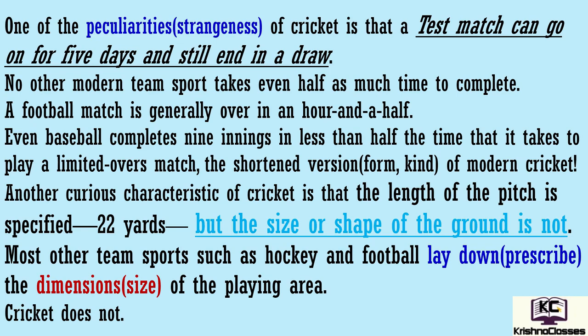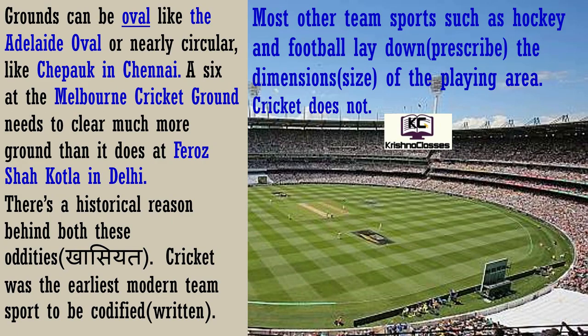Most other team sports such as hockey and football lay down the dimensions of the playing area. Baki sare team sports jaise ki hockey ya football, woh prescribe karte hain — playing area ka dimension ya size tae kar rakha hai. Cricket does not specify the size of the playing area. Grounds can be oval like the Adelaide Oval or nearly circular like Chepauk in Chennai. Cricket ka ground oval bhi ho sakta hai, jaise ki Adelaide Oval hai Australia mein, ya phir lagbhag gol bhi ho sakta hai jaise Chepauk cricket ground Chennai mein.